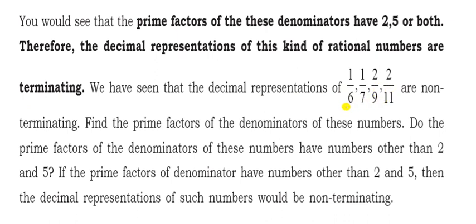For example, 1 by 6, 1 by 7, 2 by 9, and 2 by 11 — their denominators have prime factors other than 2 and 5. So these are all non-terminating decimals. Always remember: any factor other than 2 and 5 means non-terminating.